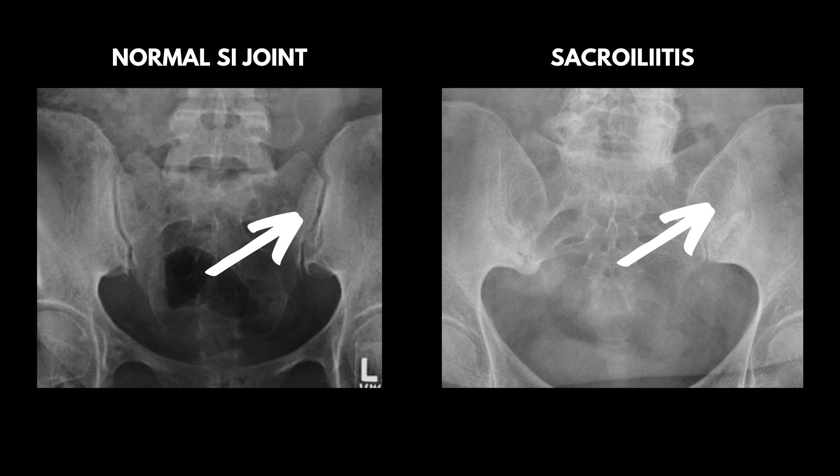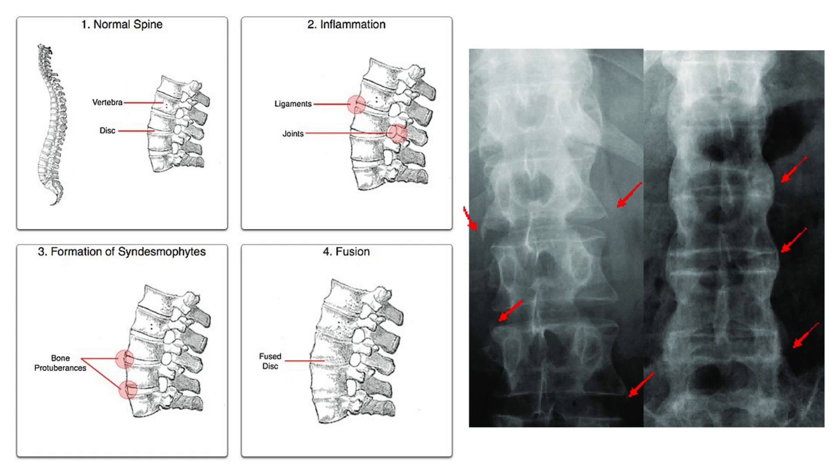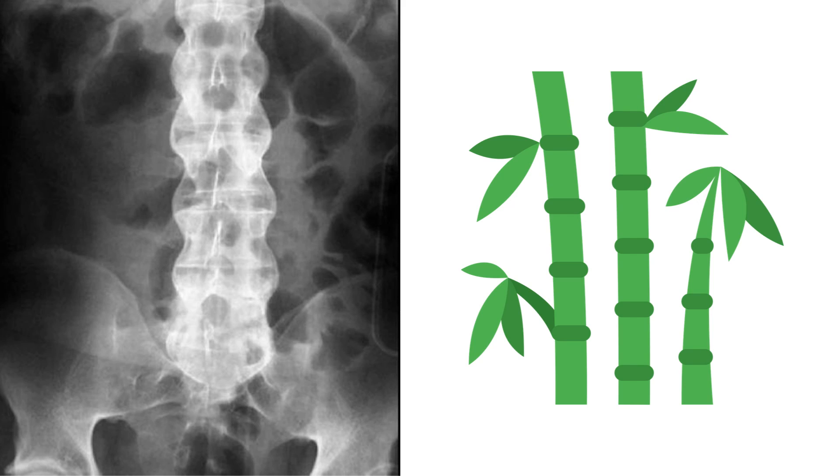The hallmark sign of AS is involvement of the sacroiliac or SI joints. X-rays can show sacroiliac erosion of the SI joints due to chronic inflammation, which is extremely common with AS, especially in early stages, and tends to be symmetrical, affecting both sides. Another important sign on x-ray is the formation of syndesmophytes — thin bony projections that stick out from the corners of the vertebra. As AS progresses up the spine, syndesmophytes can bridge and fuse two or more vertebra together. The end result, as seen on x-ray, is a radiographic feature called bamboo spine due to its similar appearance.